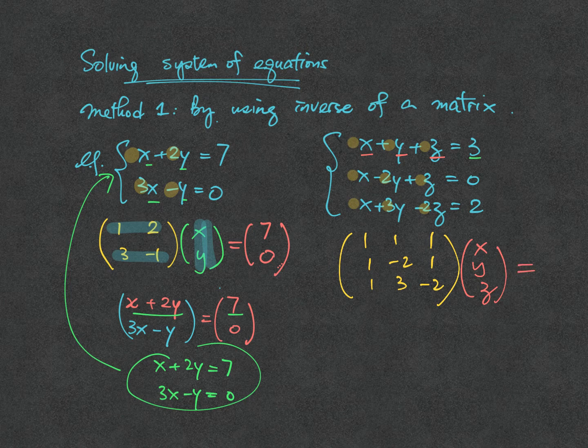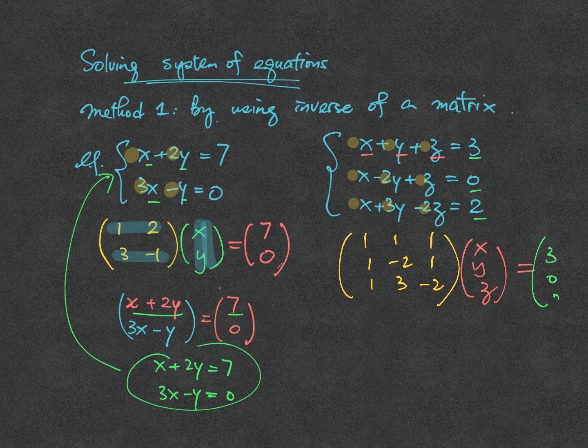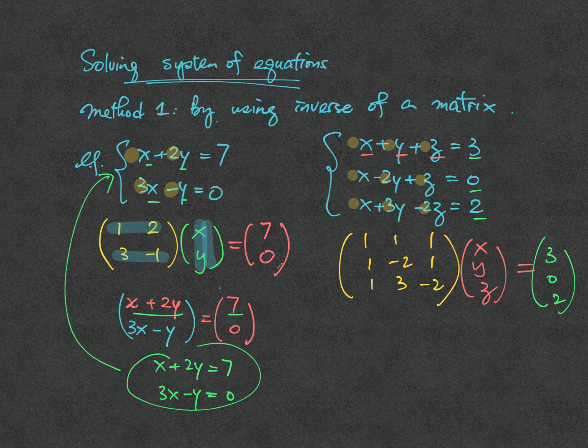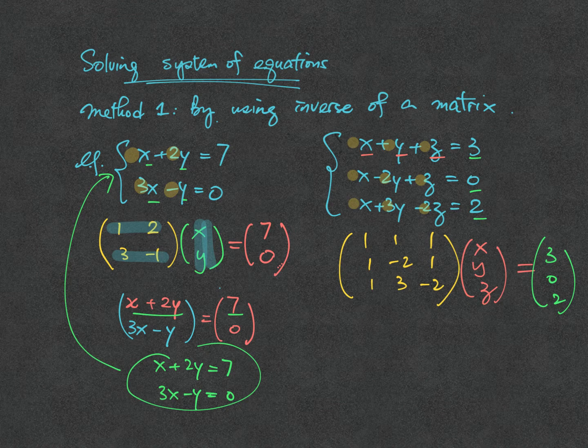On the right hand side, you've got the results of 3, 0, 2. This is the way how we rewrite our 3 equations, 3 unknowns into matrix form.